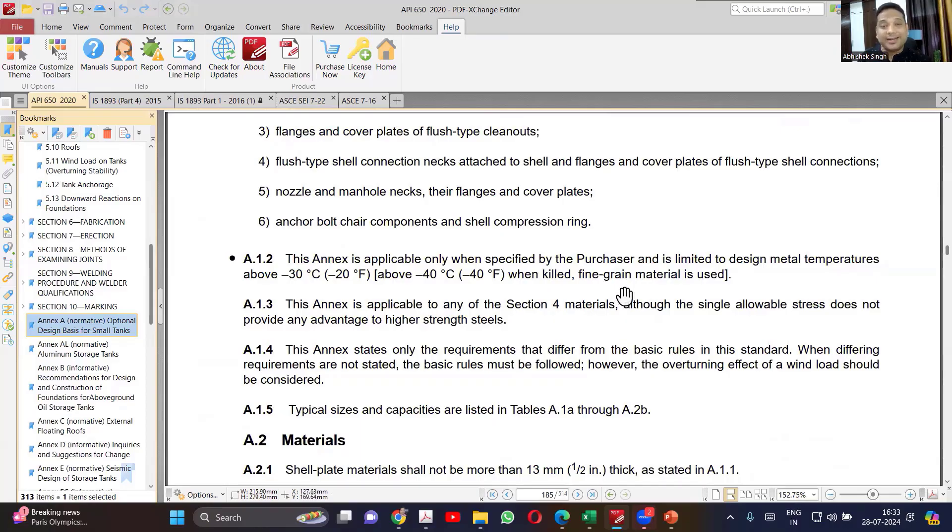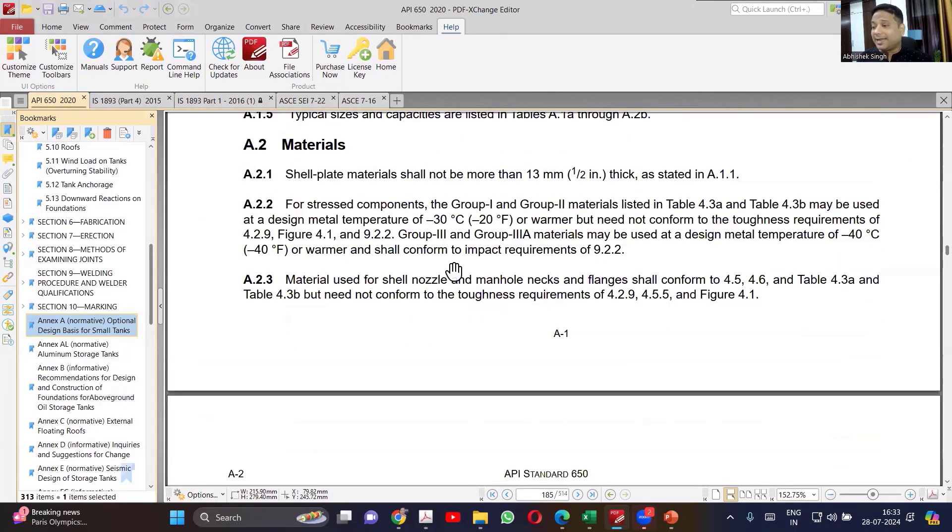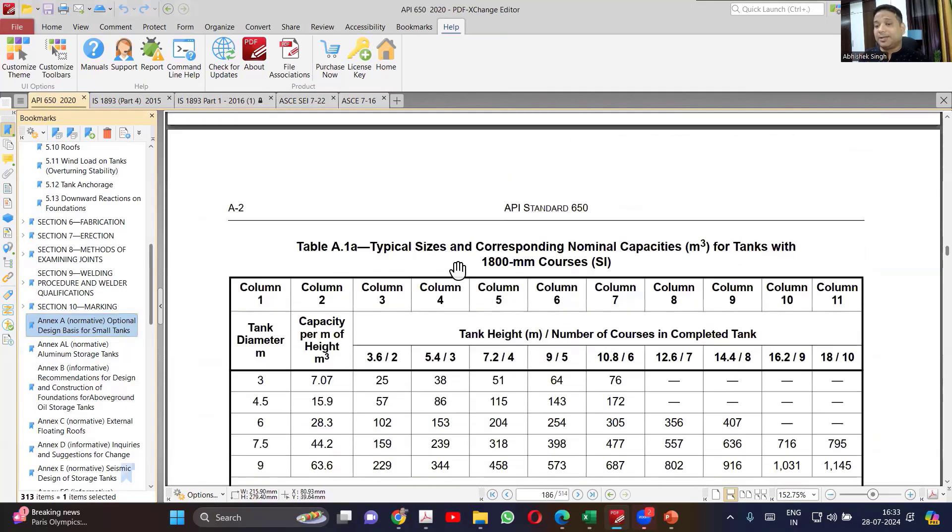When you are having fine grade, then you can go up to minus 14. Now the selection of tank size for tanks is very simple. Just to give you an information, when API started, the Annexure A was the real standard - started with this. And then other things kept on adding and finally it became an annexure.